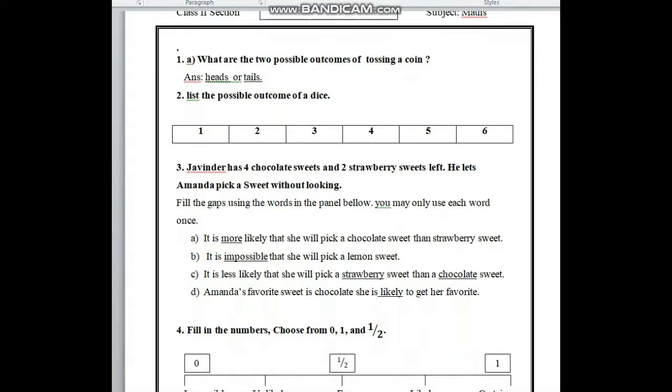Now look at number 1. In number 1 we can see what are the two possible outcomes of tossing a coin. We know there are two possible outcomes. The first one is heads or tails.